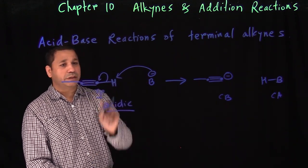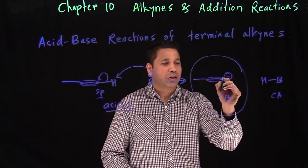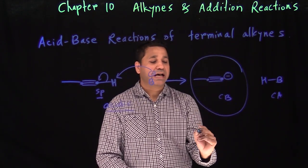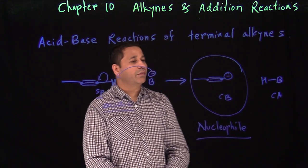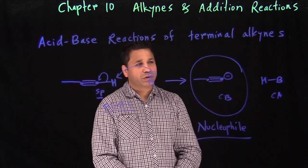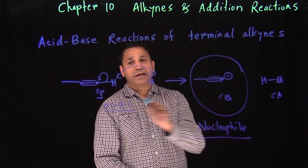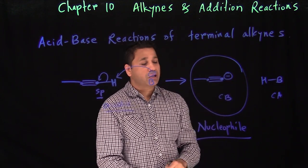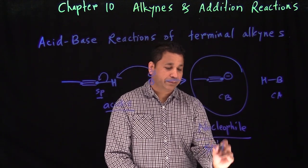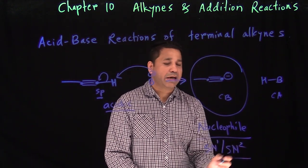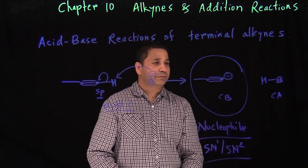The base picks up the hydrogen, and the electron pair goes back on the carbon, creating a negative charge on that carbon — that's your conjugate base. This is important because a carbon with a negative charge can be used as a nucleophile. That means we can do SN1 and SN2 substitution reactions with it. In the synthesis chapter, we'll use this acid-base reaction extensively to create nucleophiles for further reactions.